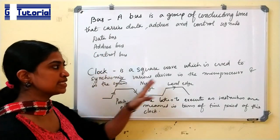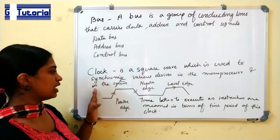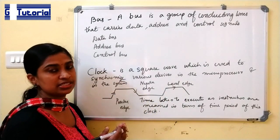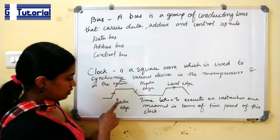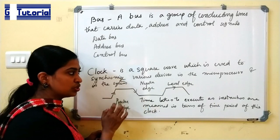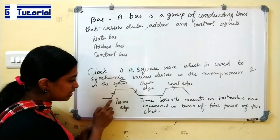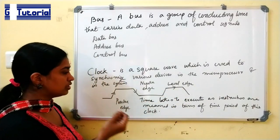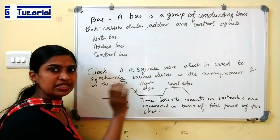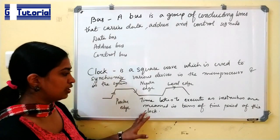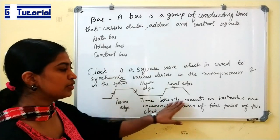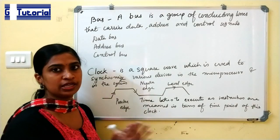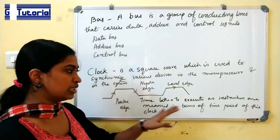Next is clock. A clock is a square wave used to synchronize various devices in the microprocessor and in the system. Devices in a microprocessor may be positive edge triggered, negative edge triggered, or level triggered. Every microprocessor requires a clock for its operation and the time taken to execute an instruction is measured in terms of the time period of this clock.